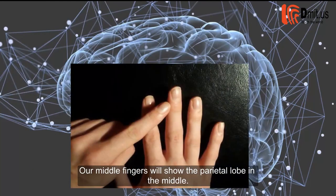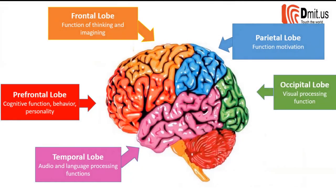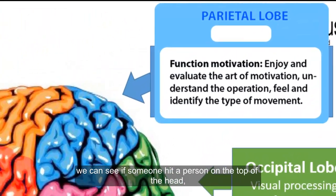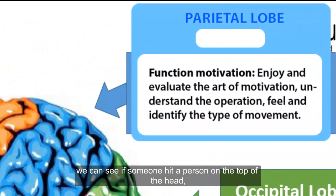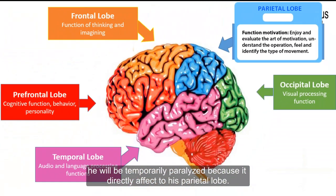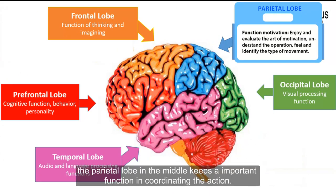Our middle fingers will show the parietal lobe in the middle. In some movies, we can see that if someone hits a person on the top of the head, he will be temporarily paralyzed because it directly affects the parietal lobe. Thus, the parietal lobe in the middle keeps an important function in coordinating action.